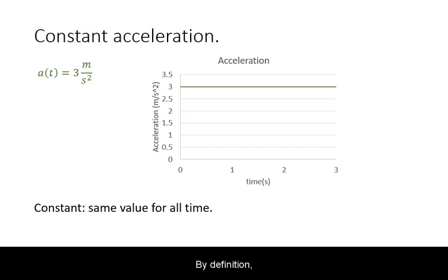By definition, constant means the same through all time. In this example, acceleration at time equals 0 is 3 meters per second squared. At all subsequent times, it is also 3 meters per second squared.